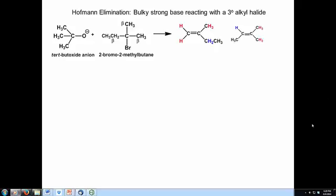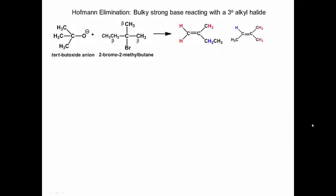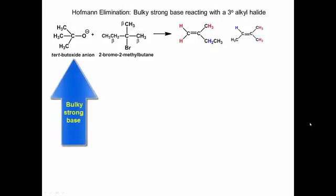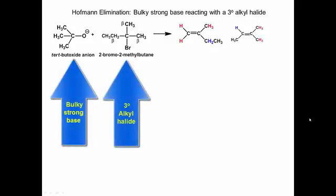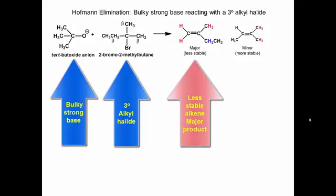Hofmann elimination. One type of Hofmann elimination is the reaction of a bulky strong base with a tertiary alkyl halide. In this reaction, the tertiary butoxide anion is reacting with the tertiary alkyl halide 2-bromo-2-methylbutane. This combination of reagents produces the less stable alkene as the major product.